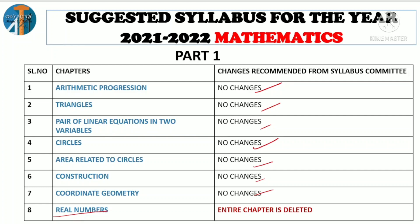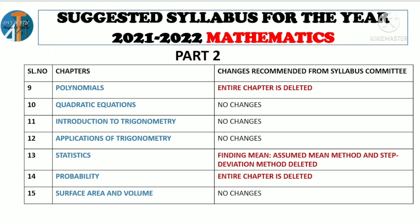This is the Part 2 textbook. Part 2 textbook covers: Polynomials, Quadratic Equation, Introduction to Trigonometry, Application of Trigonometry, Statistics, Probability, Surface Area, Volume. This is total 15 lessons.